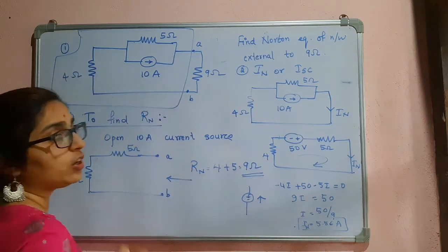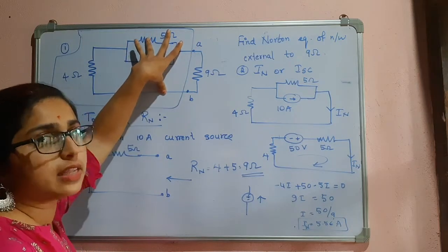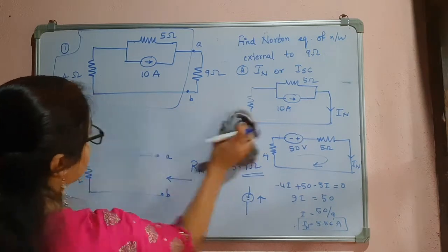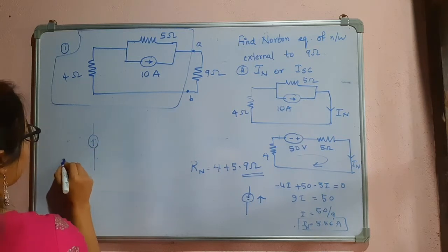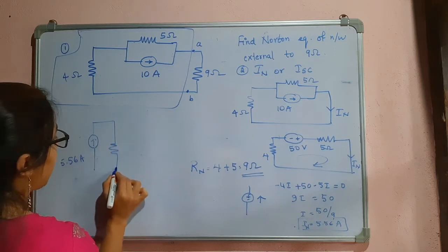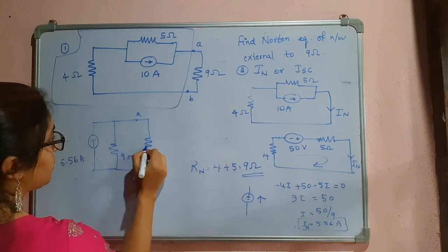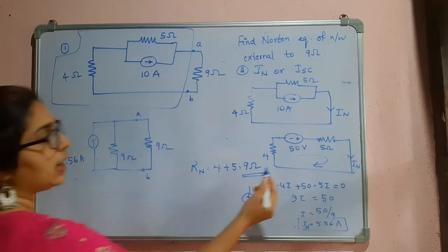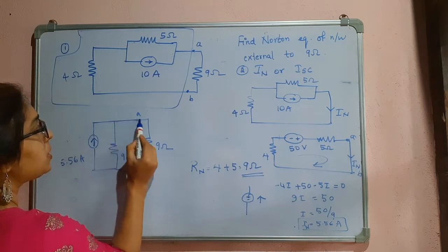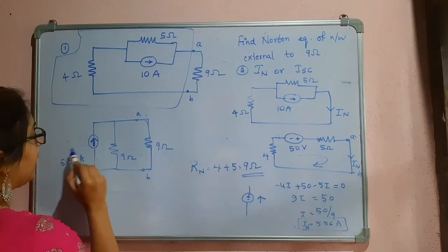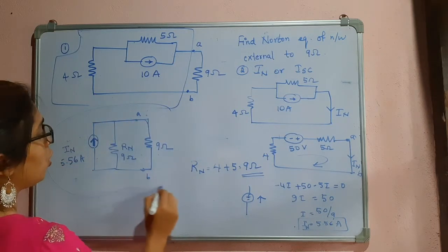Now I have got IN and I have already got the Norton's resistance, so I can replace this circuit by the Norton's equivalent circuit. It will be a 5.56 ampere current source in parallel with the resistance RN, which is 9 ohm, with terminals A and B. Now I will attach this to its position with the 9 ohm load. The current is flowing from A to B, so this will be the direction of the current source. This is IN, this is RN, and this is the equivalent Norton's circuit.